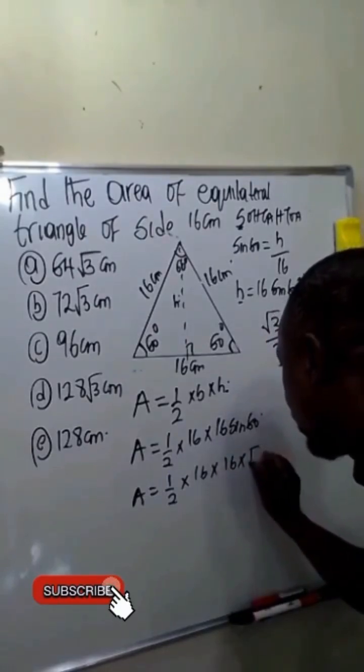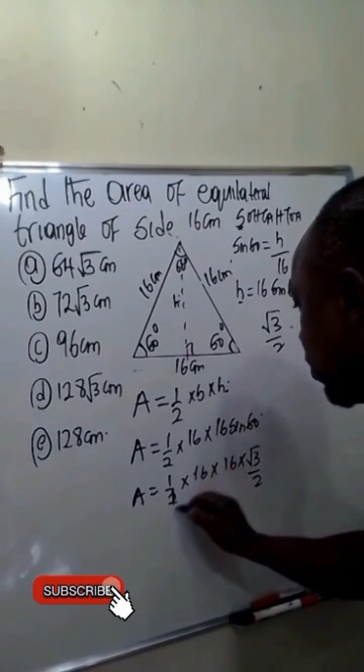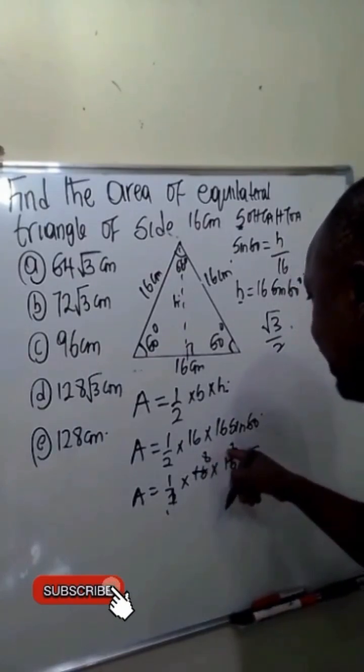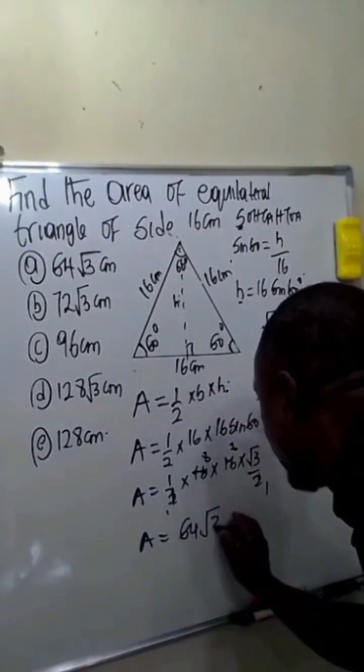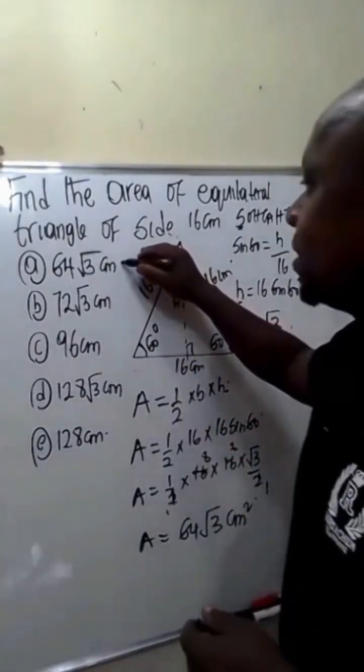Simplifying: 2 cancels, 8 times 8 is 64. So our area will be equal to 64 root 3 centimeters squared. This implies our answer is option E.